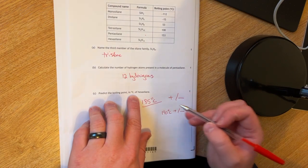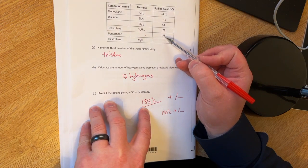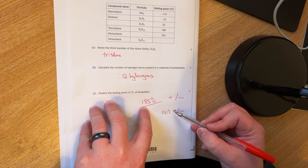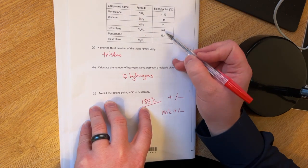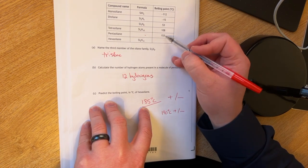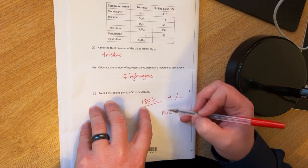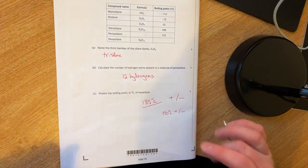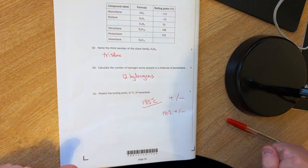You have to predict the boiling point in degrees Celsius of hexasilane. My initial instinct was 185 degrees Celsius. However, I'm wondering if it's maybe 190 plus or minus something. My initial reasoning was that the rise is getting smaller as you go up. So I thought that it's maybe a difference of about 32, 35-ish for this bit here, but it could be as much as 40. So not 100% certain on that one.